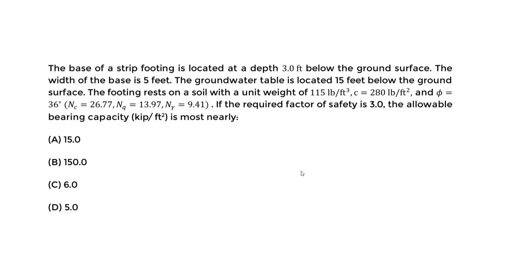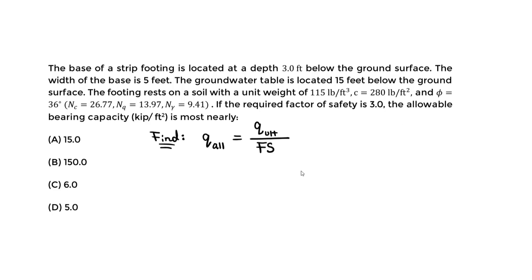We want to find the allowable bearing capacity, Q_allowable. The equation is Q_allowable equals Q_ultimate divided by the factor of safety. Note that this equation is not provided in the handbook — you should know it. All you do is take Q_ultimate divided by the factor of safety to get Q_allowable, given the factor of safety.